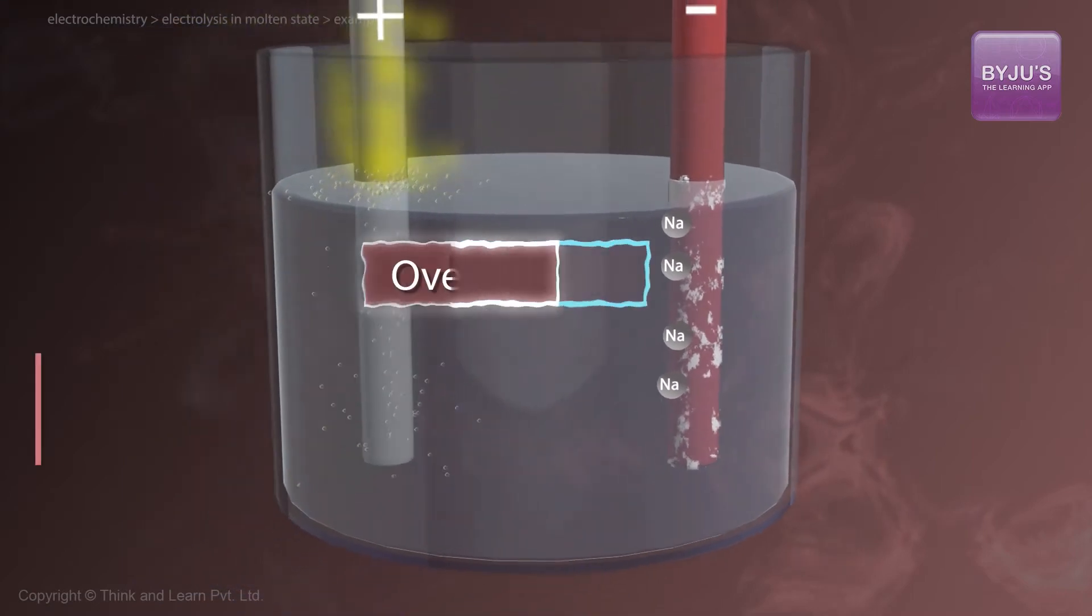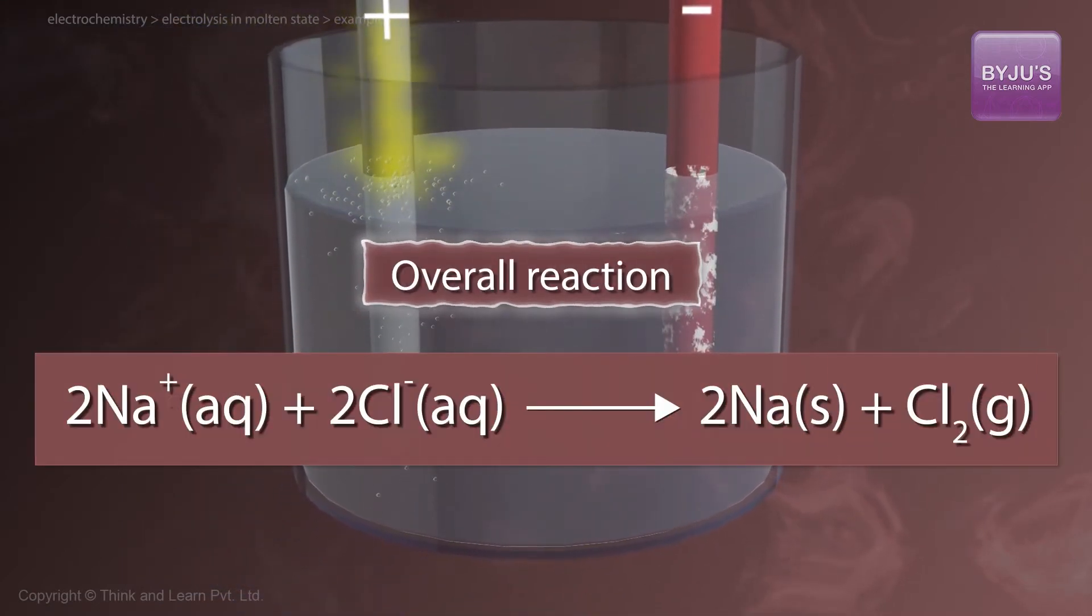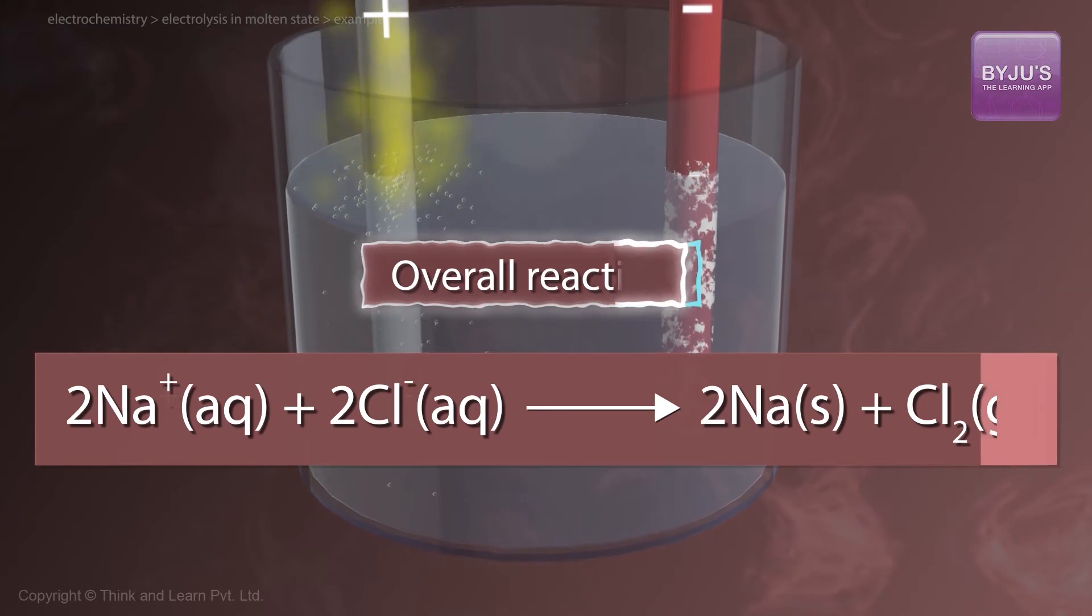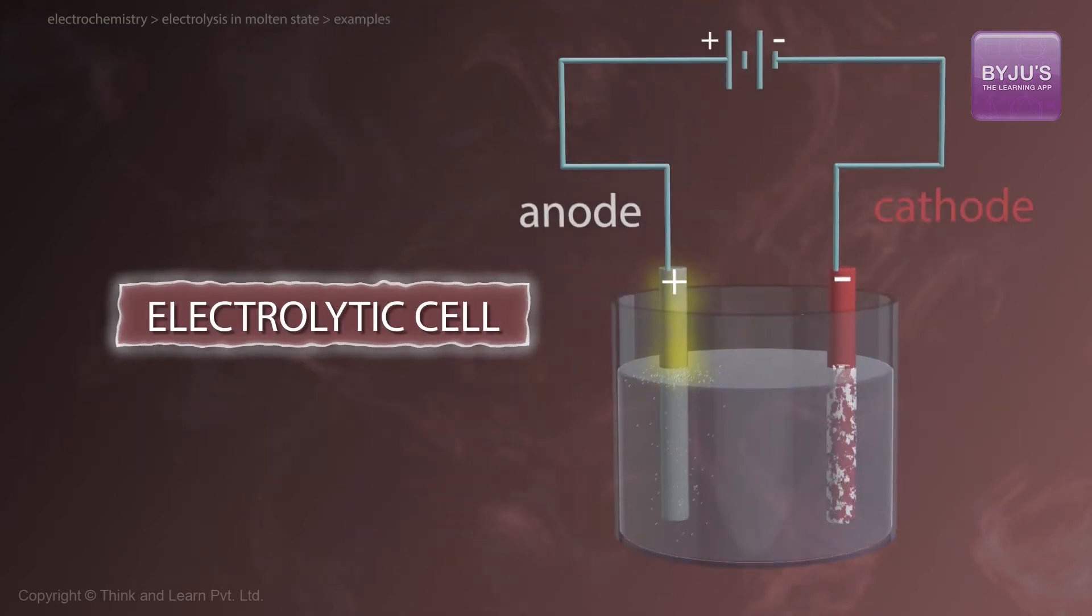The overall reaction is 2 Na+ + 2 Cl- gives 2 Na solid plus Cl2 gas. This type of cell is called an electrolytic cell.